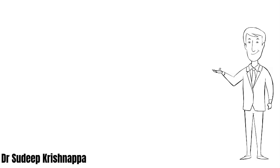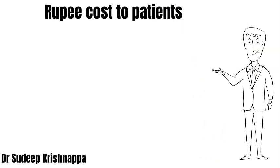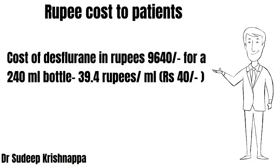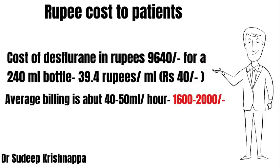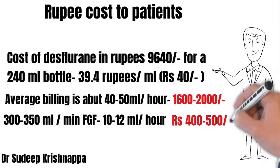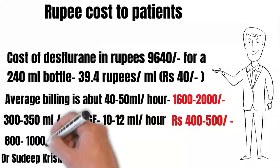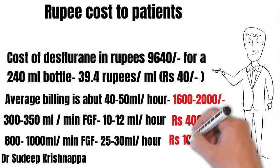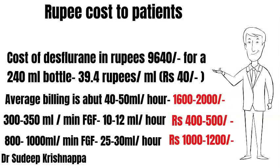Reducing the wastage of desflurane by lowering fresh gas flow immediately translates to saving money for the patient. Commercially available desflurane is sold in a 240 ml bottle costing around 10,000 rupees, making each milliliter approximately 40 rupees. The average billing at our hospital is about 50 mils per hour, translating to around 2,000 rupees per case. Reducing fresh gas flow to about one liter or less can reduce the cost of anesthesia by about 50 percent, and reducing it further to about 300–350 mils per minute can increase savings to around 70 percent.